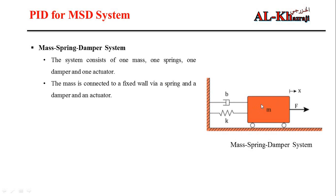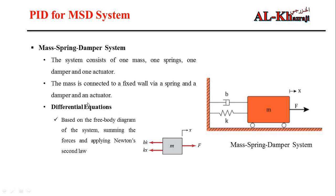Considering the following system: we have a mass connected to a fixed wall by a damper and spring, and there is a force applied to this mass. The force is considered as the input to the system, and the mass moves in the X direction. To derive the differential equation, we draw the free body diagram. Based on Newton's second law, the summation of forces on the mass equals the net force. Forces in the positive X direction are positive, and forces in the opposite direction are negative.